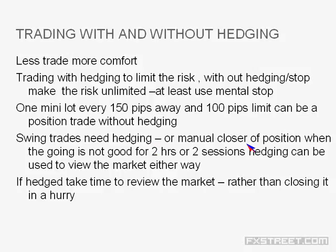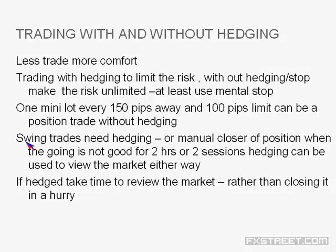For swing trades targeting 30-40 pips, manually close your position if the market is not going well for two hours or two sessions. If it is going well, keep stop at entry — this is an immediate contingency plan. As soon as the position starts making profit, keep stop at entry so you have no fear of a loss booking. Hedging can then be used to view the market either way instead of a stop.